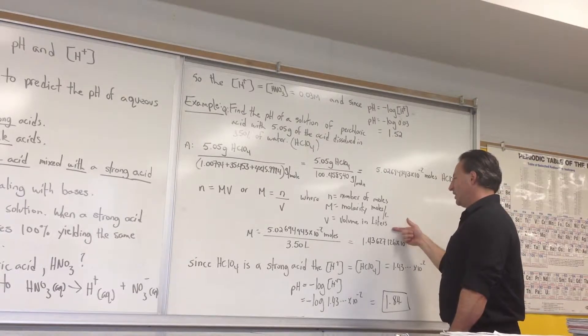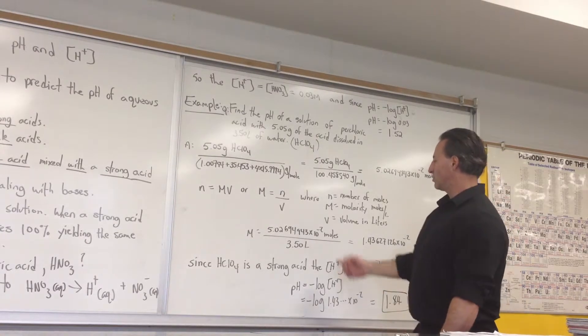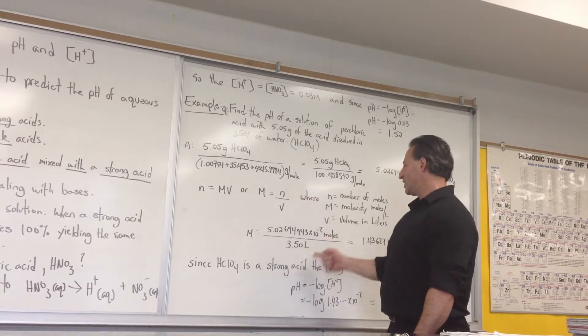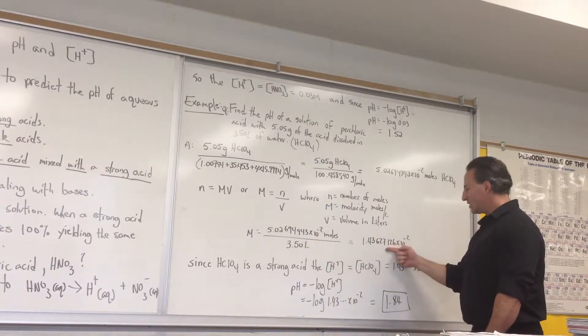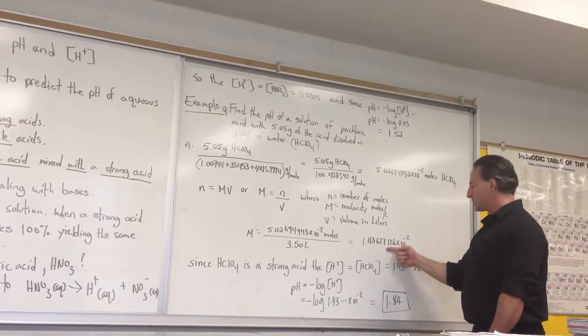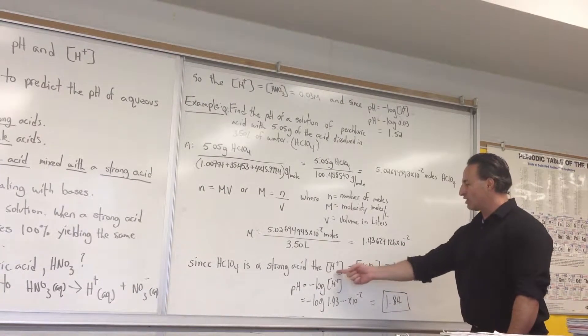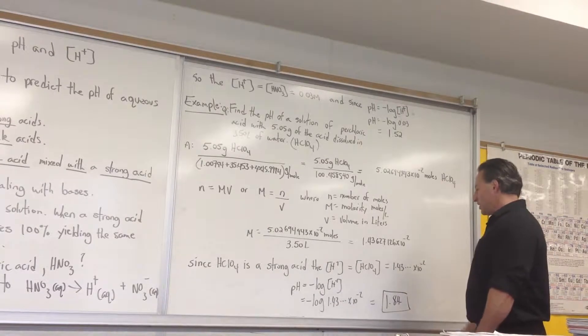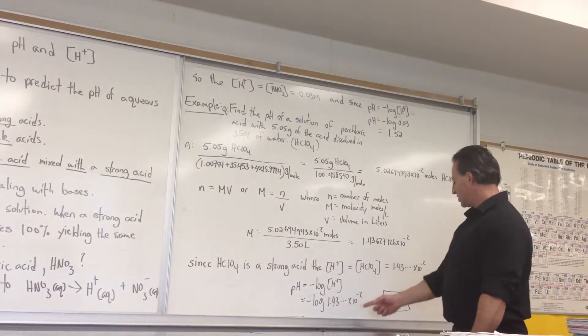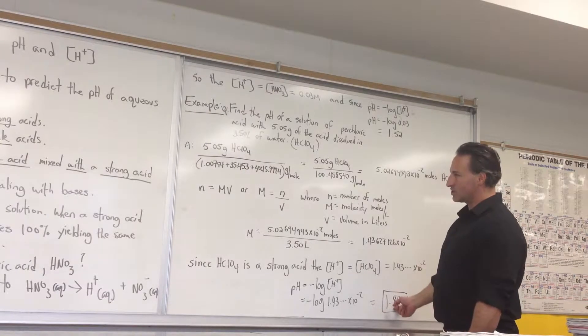So plugging into this equation, here's the number of moles, here's the volume. We get this molarity. Then we plug this amount—since the molarity equals the concentration of protons, we can enter it into the pH equation to get the pH. It turns out the pH is 1.84 under these conditions.